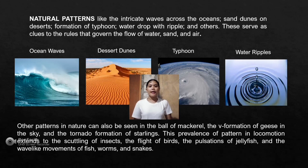Other patterns in nature can also be seen in the ball of mackerel, the V formation of geese in the sky, and the tornado formation of starlings. This prevalence of patterns in locomotion extends to the scuttling of insects, the flight of birds, the pulsation of jellyfish, and the wave-like movements of fish, worms, and snakes.